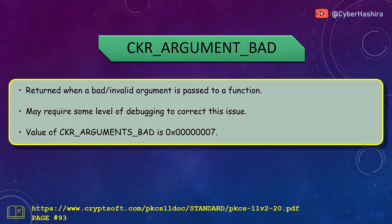Some functions in PKCS11 require additional information as arguments, and if that argument is not correct, Crypto Key will return CKR_ARGUMENT_BAD. Depending on what happened, you may need to think of a way to troubleshoot the problem. CKR_ARGUMENT_BAD has a value of 7 and can be read about on page 93.